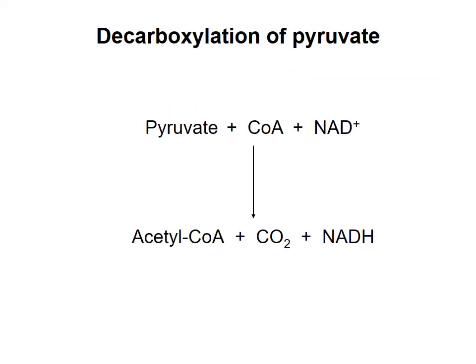The net reaction for this process is shown here. You've got three carbons on pyruvate. One of those is fully oxidized to CO2, and the electrons are transferred to NAD+ to make NADH. The remaining two carbons of pyruvate are transferred onto coenzyme A to make acetyl-CoA, the structure of which I showed in the previous video.